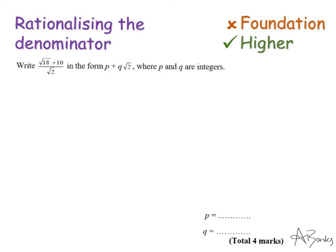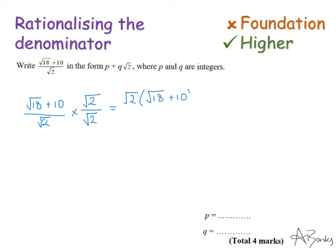Here's a more complicated example. Write root 18 plus 10 over root 2 in the form p plus q root 2, where p and q are integers. It's the same process — we're just dealing with more complicated surds. I've got root 18 plus 10, all over root 2, and I'm going to use the same trick. To get rid of this root 2 on the bottom, I multiply by root 2 over root 2. On the top, I'll write it as a bracket: root 2 multiplied by (root 18 plus 10), and on the denominator I'll have 2.